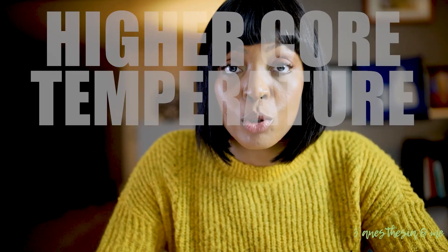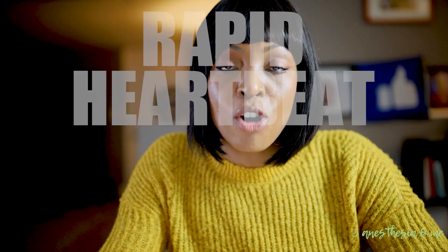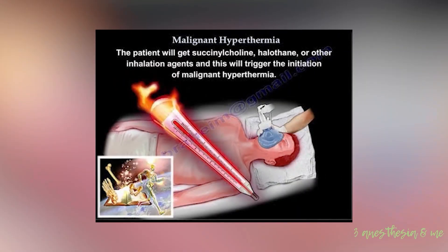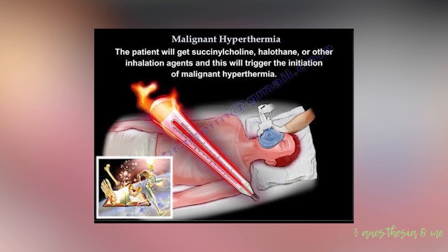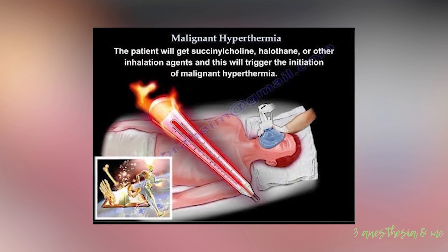Signs include muscle rigidity and rapid heart rate. And when the patient is intubated, we will see elevated end-tidal CO2, or the amount of CO2 that is produced. The reason why you see these signs is because there's an increase in muscle breakdown and that causes the body to respond in this way.